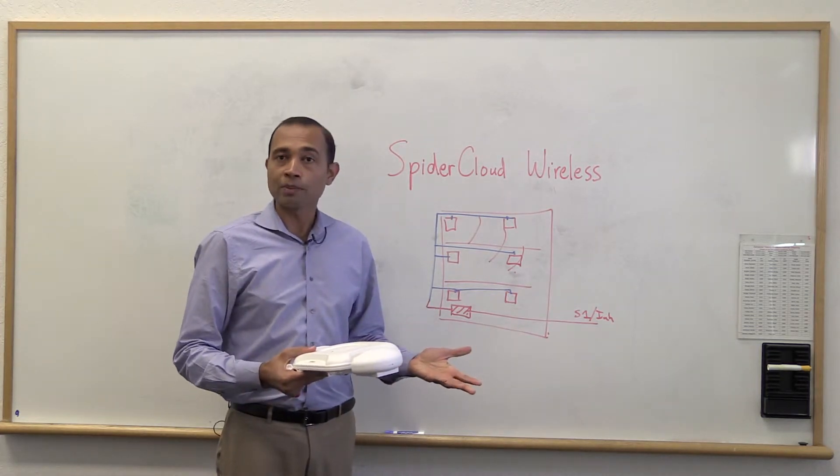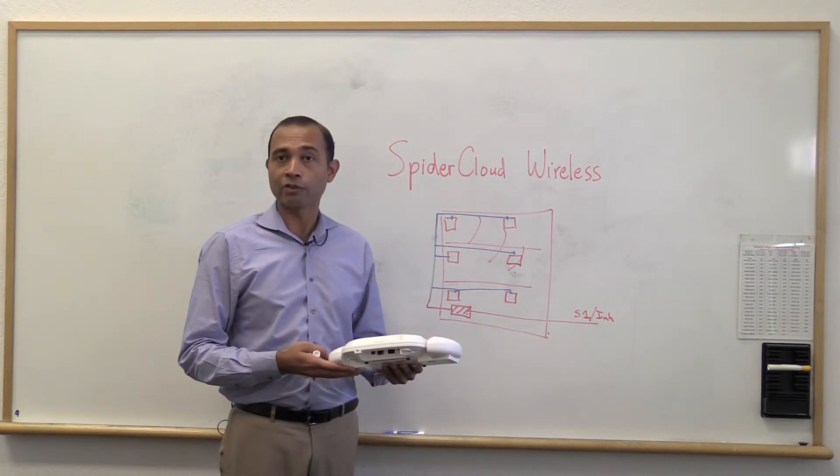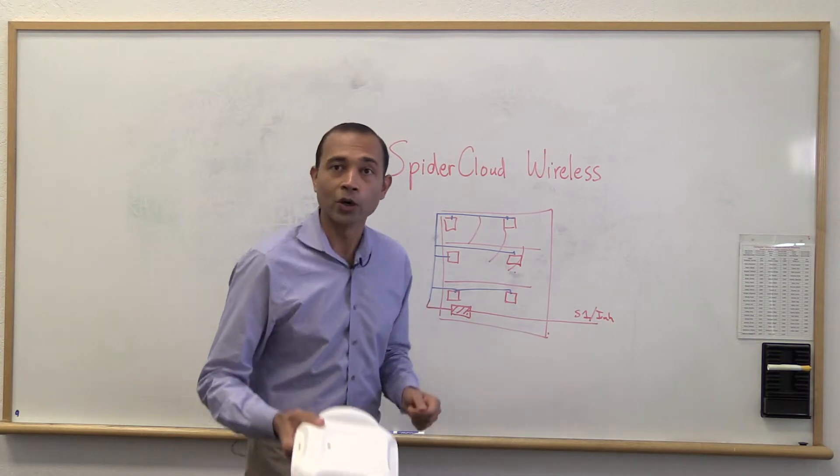So now if you're doing a deployment, all you have to do is take off the Cisco Wi-Fi access point, install the module that you get from SpyderCloud and you're ready to go.